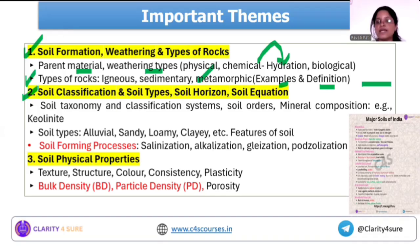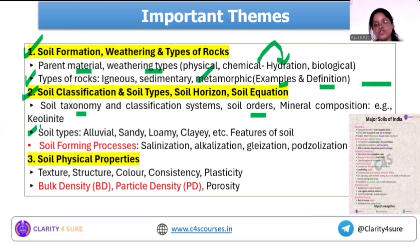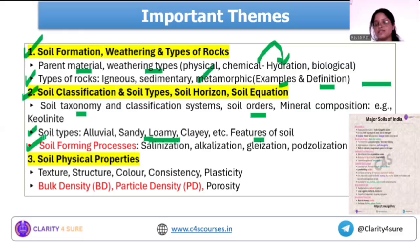Next is soil classification: soil types, soil horizons, and soil formation equations — Jenny's equation, active and passive factors. Cover soil taxonomy, soil orders, mineral compositions, and soil types — alluvial, regur (black), laterite, and red soils — the major soils of India. Also cover soil texture classifications: sandy, loamy, and clay. Know the key features of major Indian soils, and soil forming processes, as questions have come from this section in mains.